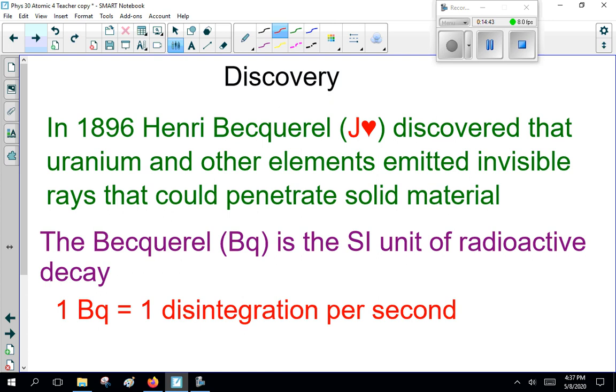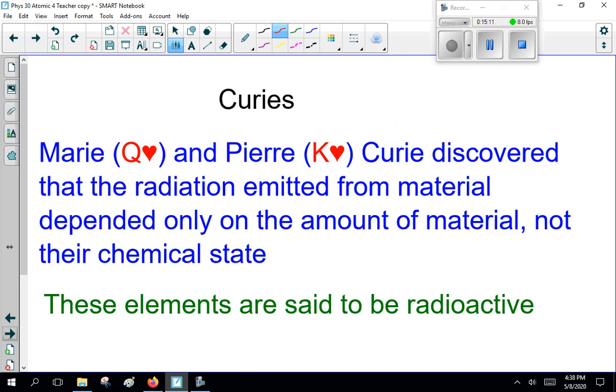All right. Now, getting on to the discovery of this. In 1896, Henry Becquerel, the Jack of Hearts, discovered uranium and other elements emitting invisible rays that could penetrate solid material. Becquerel is the SI unit of radioactive decay. That's named after Henry Becquerel. Now, one Becquerel is one disintegration per second. Now, the problem with that, of course, is different radiations are a different amount of danger.